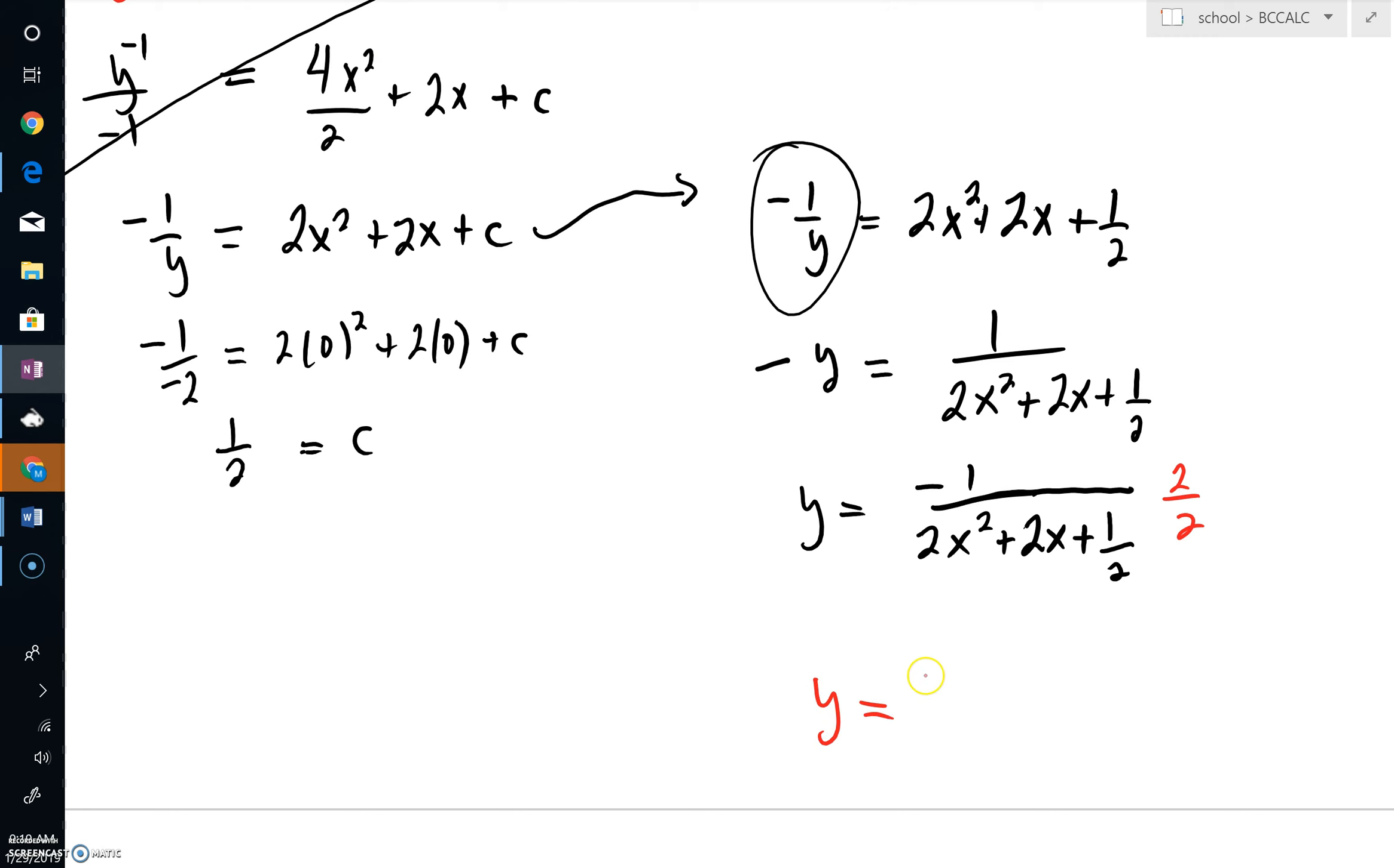And you can see where we're going. Our final answer, the numerator, is negative 2. Down below, we'll have 4x squared plus 4x, and then 2 times 1 half is just a 1. And that would be our final answer. Thank you.